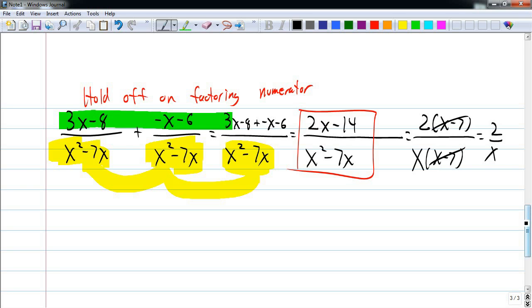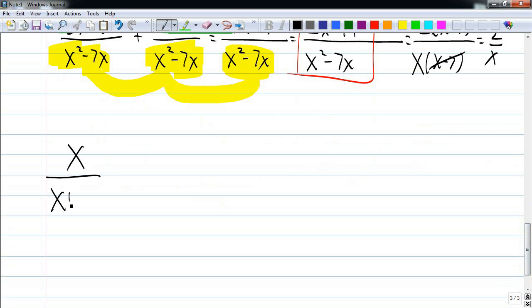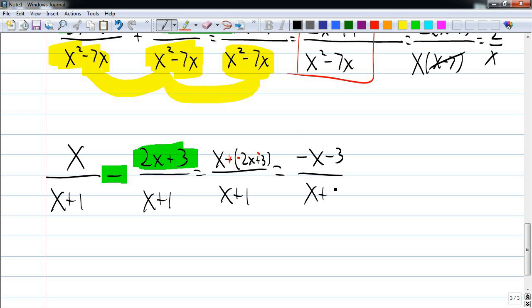Let's look at one more quick example. x over x plus 1 minus 2x plus 3 over x plus 1. Common denominator, I can copy that over, and then I subtract my numerator. So this is going to be x minus 2x plus 3. Notice that because I am subtracting this, I've got to flip signs and add. So this becomes negative 2x minus 3 and this becomes a plus. If you're subtracting, don't forget to flip signs and add.